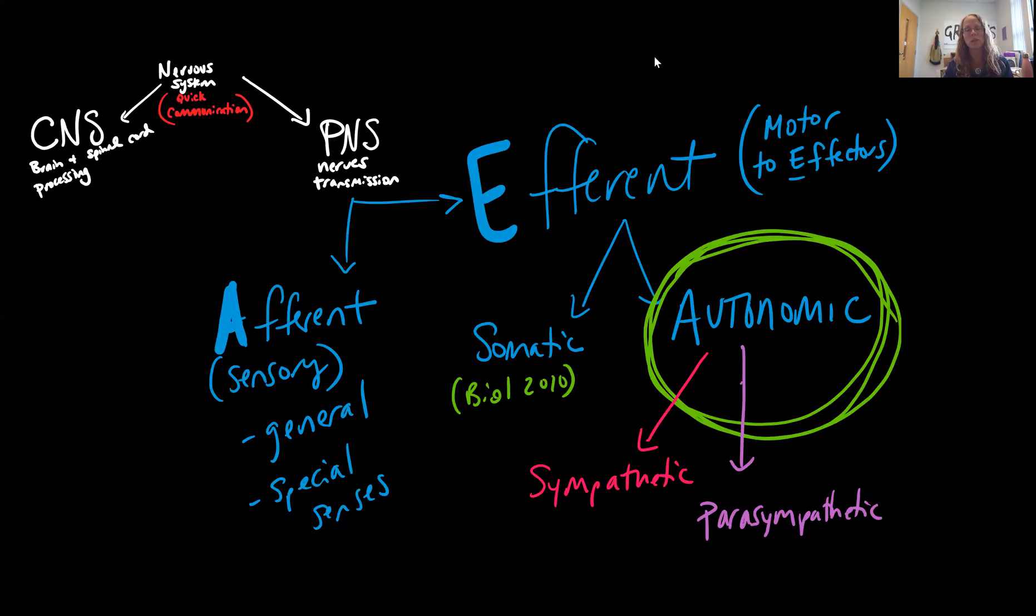The autonomic nervous system is divided into two divisions, the sympathetic and the parasympathetic. So we're going to have an entire video dedicated to each one of these to make sure that we are understanding. Basically, they're doing opposite functions of each other and in that way, helping to maintain the homeostatic regulation of our internal organs. And that is it.